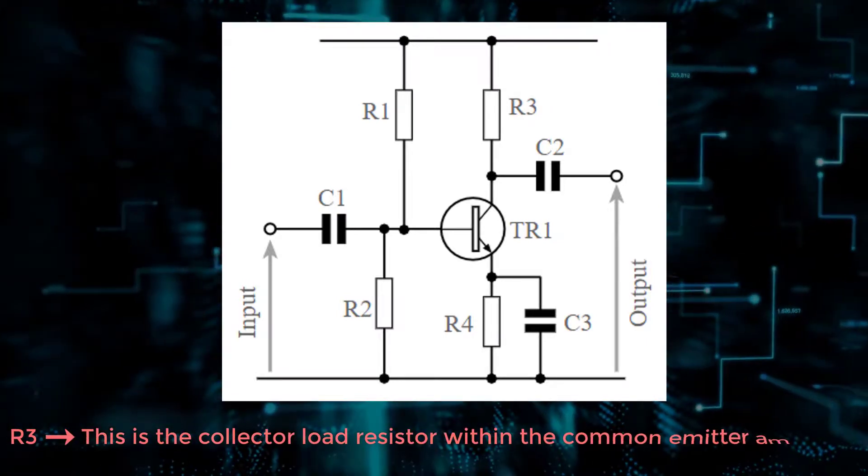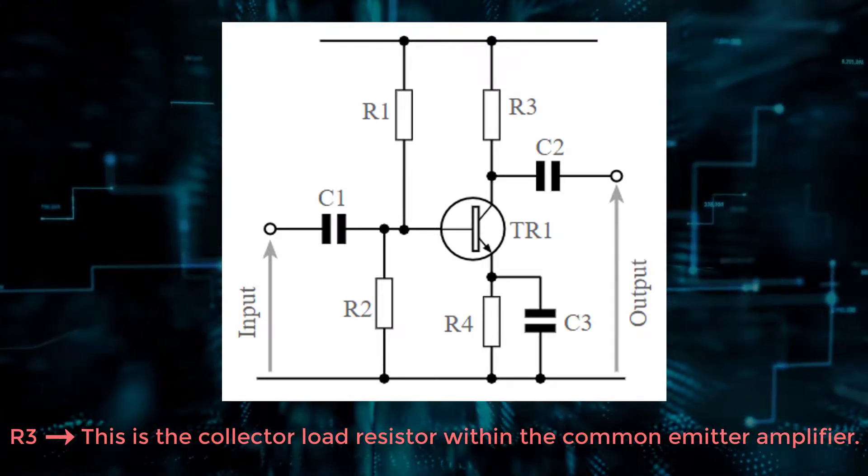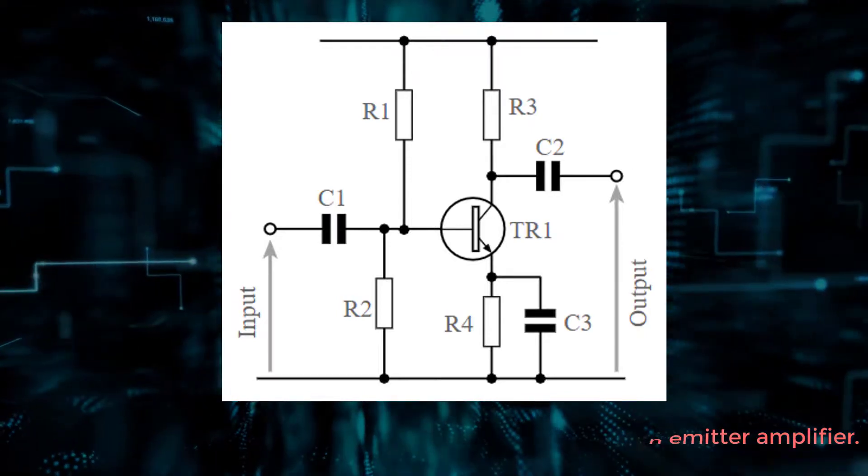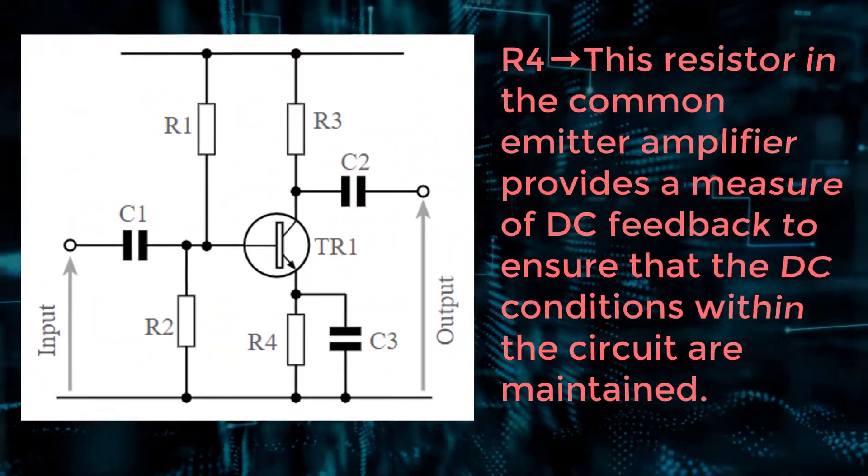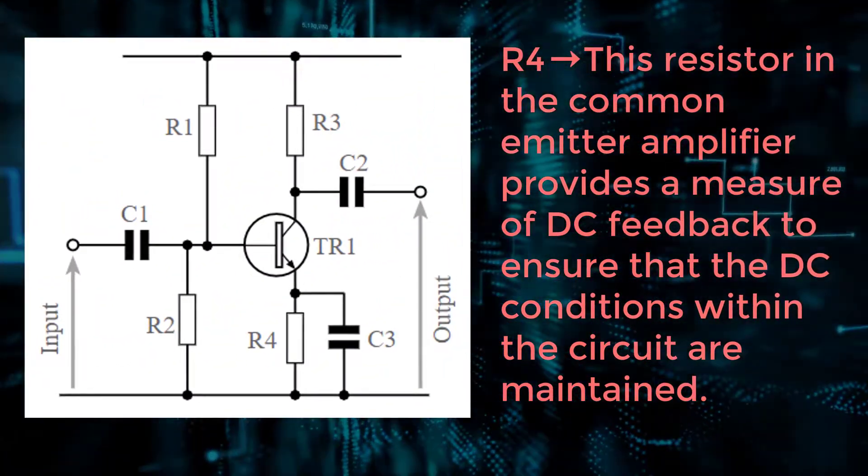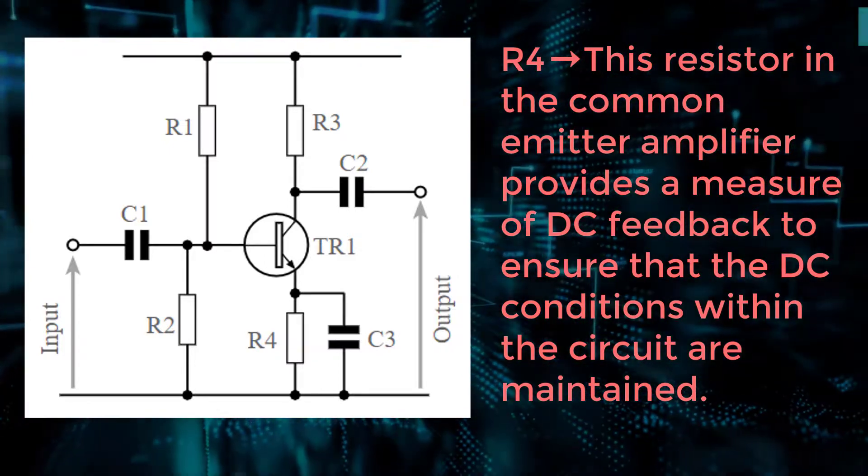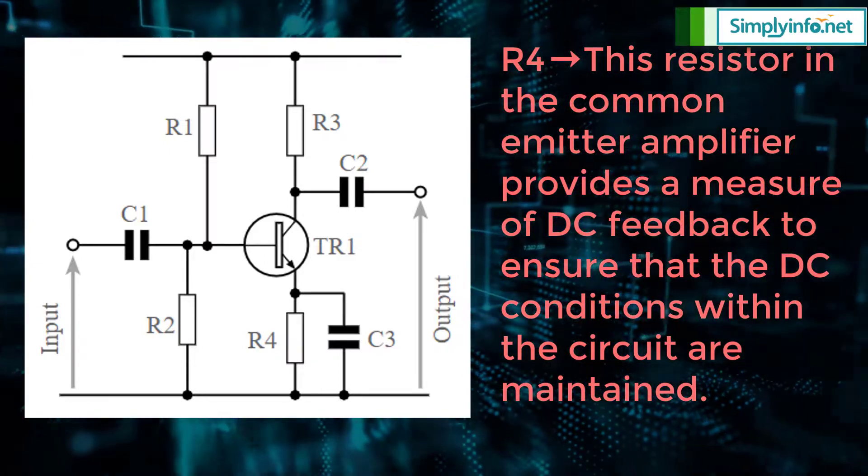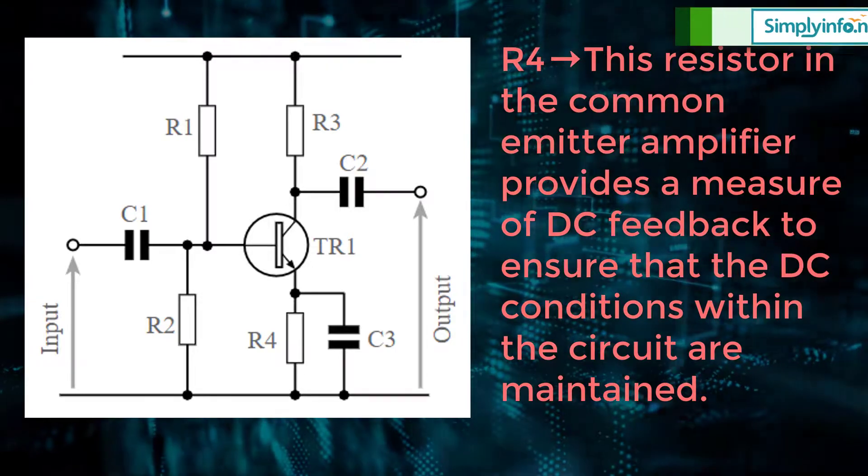R3, this is the collector load resistor within the Common Emitter Amplifier. R4, this resistor in the Common Emitter Amplifier provides a measure of DC feedback to ensure that the DC conditions within the circuit are maintained.